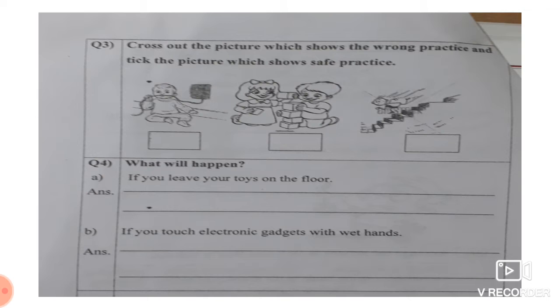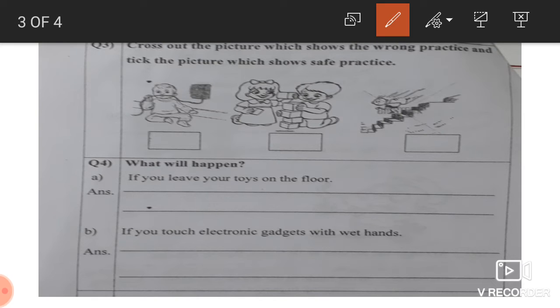Now, question number three. Cross out the picture which shows the wrong practice and tick the picture which shows the safe practice. Yes, children, it's very simple and easy. See, this boy is playing with the fire. So we have to put a cross. This is safe, playing with the blocks. This is not correct. Here, running down the staircase, no.